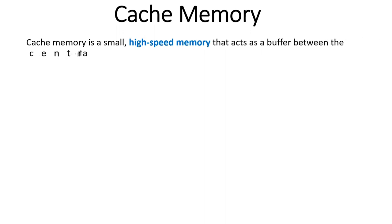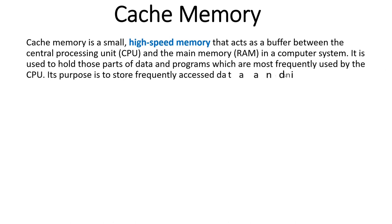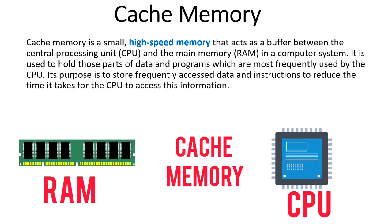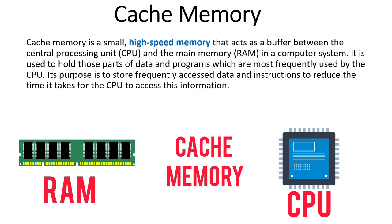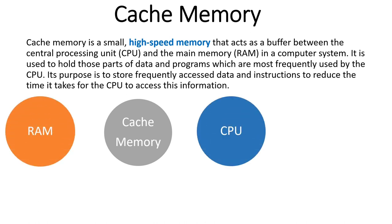Cache memory is a special type of memory which is very small in size, but it is the fastest memory of our computer system. It acts as a buffer between the CPU and the main memory, especially RAM. Cache memory is placed between RAM and the CPU to increase the performance of the computer system and is used to hold the parts of data and programs most frequently used by the CPU. Cache memory and RAM together help the CPU increase overall PC performance.